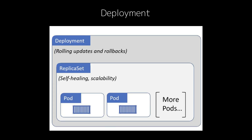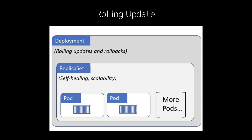For example, if you want to update your application with new code, a deployment handles that by gradually replacing old pods with new ones. Kubernetes ensures there's no downtime during this update. This process is called a rolling update, where pods are replaced one by one, ensuring the app stays available to users.